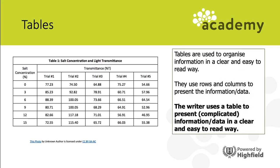Tables help the reader understand potentially complicated data by organizing information clearly using rows and columns. The data might be numerical, as in this example, but it could also be words. If this information were written as sentences it would be pages and pages long, but in a table you can instantly see, for example, that trial number five at nine percent concentration gives 52.96 - all without reading lots of text. Writers use tables to present complex information or data in a clear and easy-to-read way.